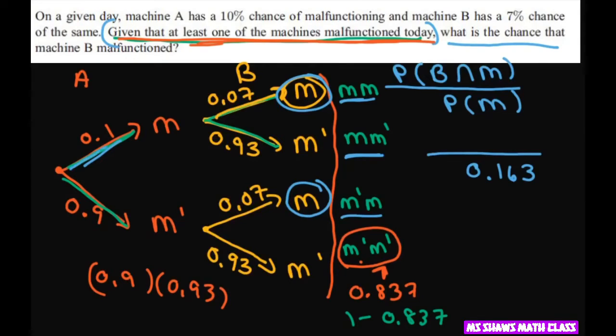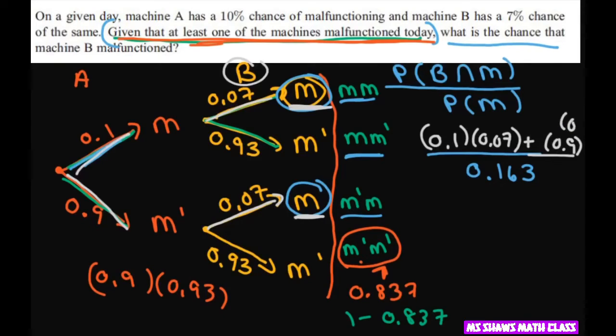What you're going to do is multiply these two, 0.1 times 0.07 or it could be these two. Because we want B. The only way it's malfunctioning on B is these two. So, that's going to be 0.9 times 0.07.